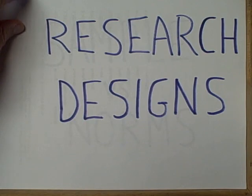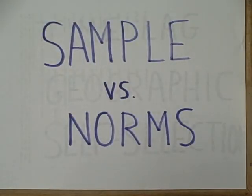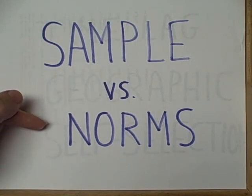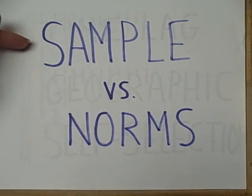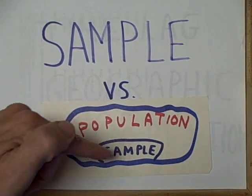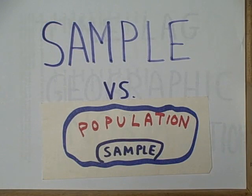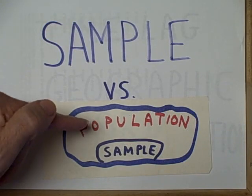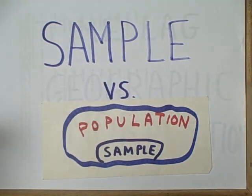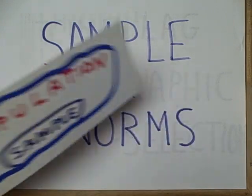The first of these is called sample versus norms. This means that we take some pre-established norms — like a percent, a mean, or a median — and we compare that to what we observe in our particular sample. So we're comparing our individually observed sample to the norms usually obtained from a larger population.